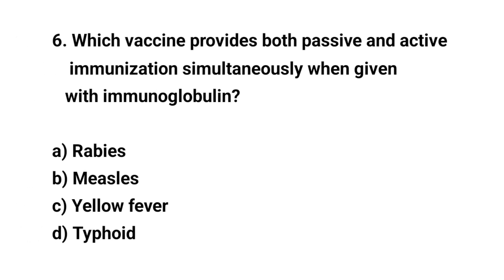Question number 6. Which vaccine provides both passive and active immunization simultaneously when given with immunoglobulin? The right answer is A: Rabies.